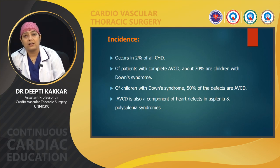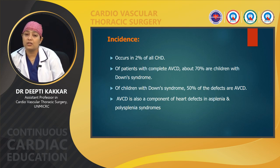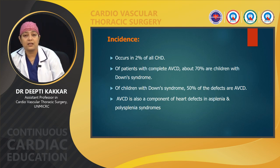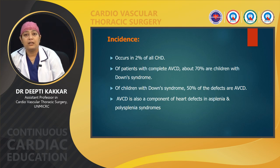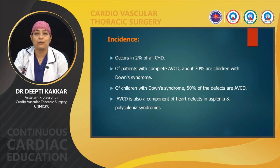Coming to incidence: AVCD occurs in 2 percent of all congenital heart diseases. In patients with complete AV canal defects, 70 percent of children have Down syndrome, and of children who have Down syndrome, at least 50 percent have AVCD as a heart defect. AVCD is also a component of defects in cases of asplenia, polysplenia, and heterotaxy syndromes.